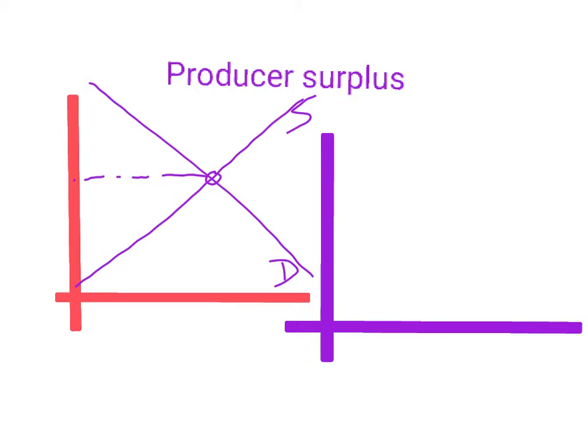Let's say that the supply curve increases, so we would have, instead of S1, we're going to have S2. What happens to producer surplus? We have to realize now that producer surplus, let's give it a different color, make it green. Intersection point, straight line across, and now the new triangle is this area here.